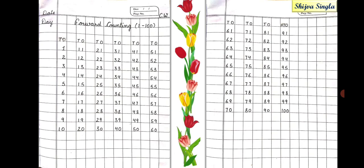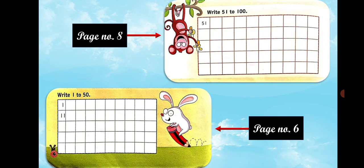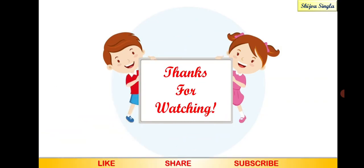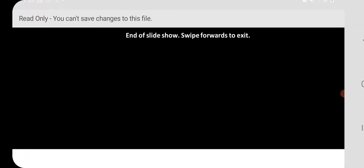After that, give heading as forward counting, and in brackets put 1 to 100. And, do mention 1s, 10s, and 100s on the top of each number as per the requirement. Now, same work you have to do in your book as well. It's on page number 6 and 8. All right.